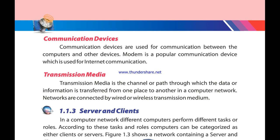Transmission media is the channel or path through which data or information is transferred from one place to another in a computer network. Nowadays, networks are connected by wired or wireless transmission media. There are two types: wired media, which uses cables, and wireless media, which uses signals.